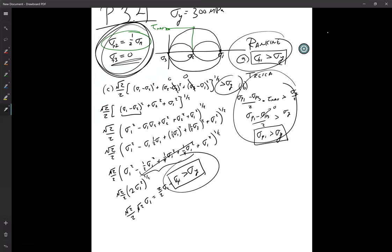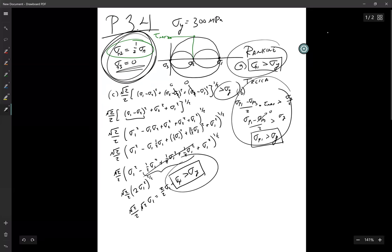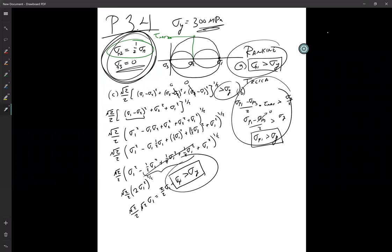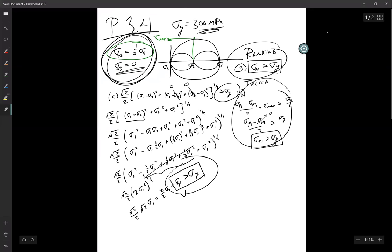they have exactly the same criteria that they fail when sigma p1 is larger than the yield stress. And I think that's kind of a neat problem the way they set it up so that with a little bit of polynomial work, you can see that these have identical solutions.